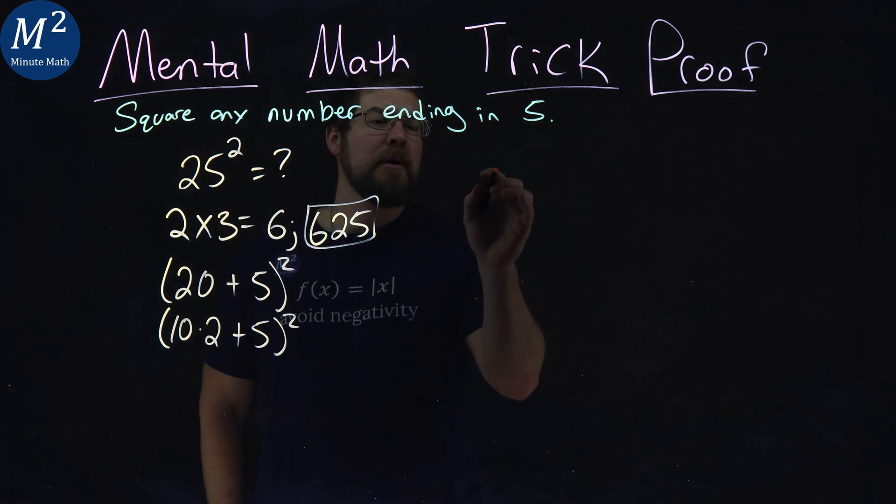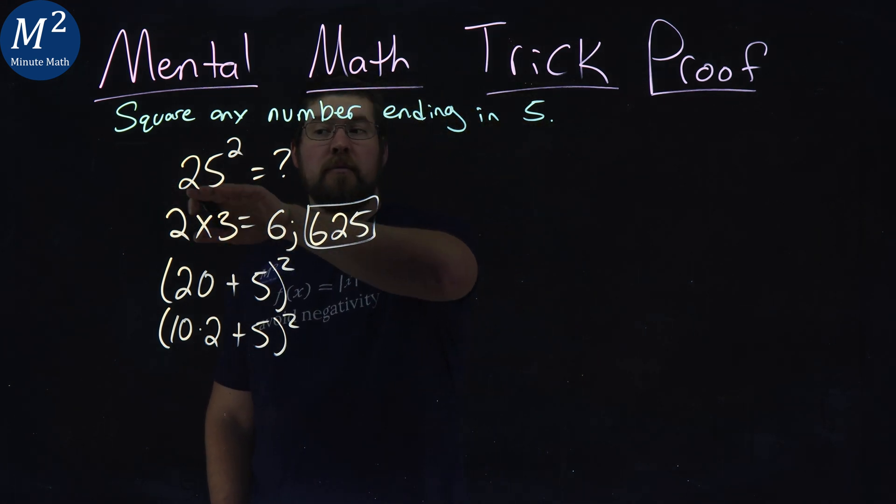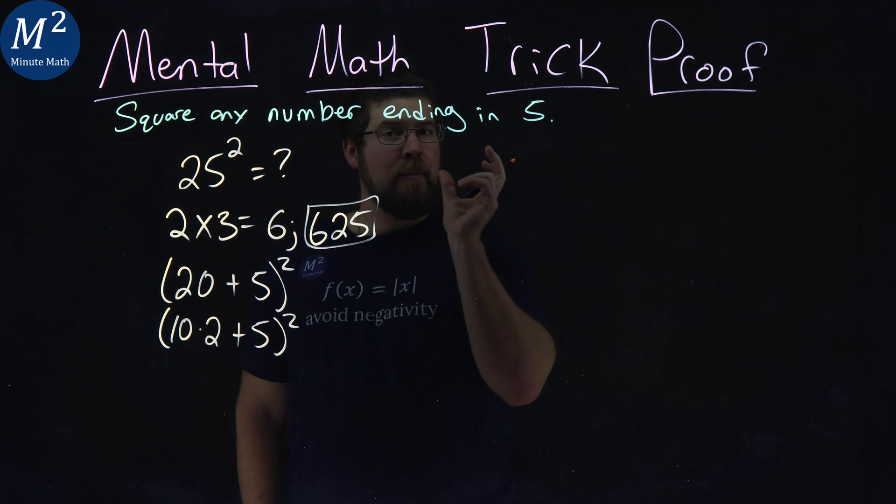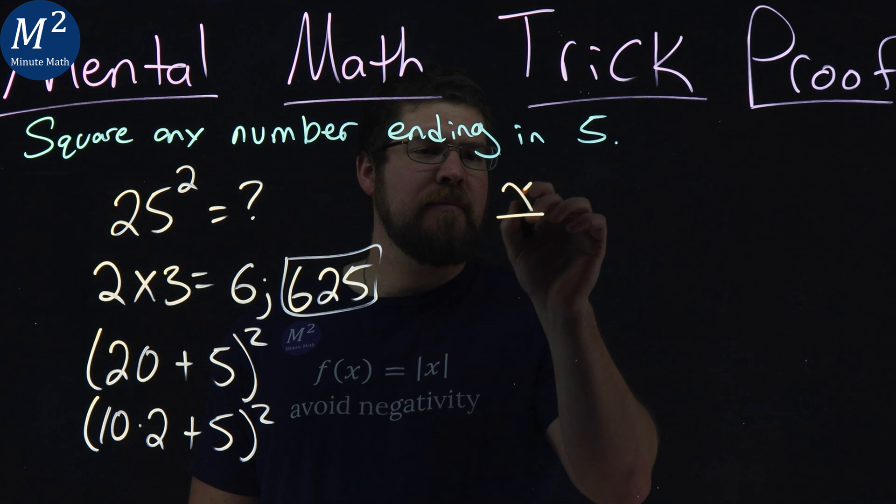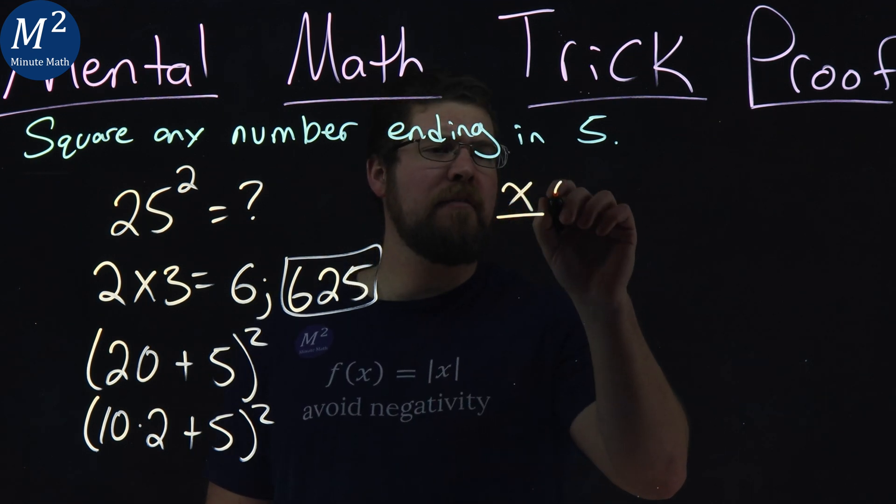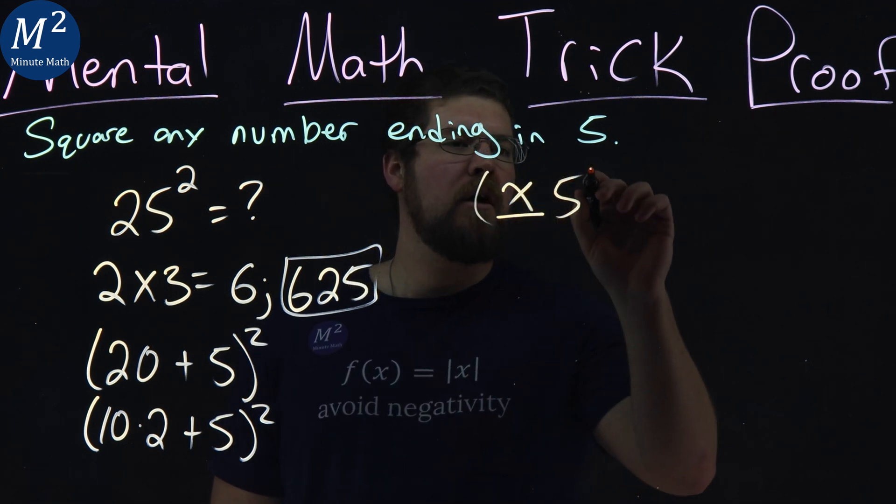So our problem here says whatever is in front of the 5, we have to multiply it by that plus 1. So we take that, let's call it x here, that first area, whatever it is, and then we have a 5 and we're squaring all of that.